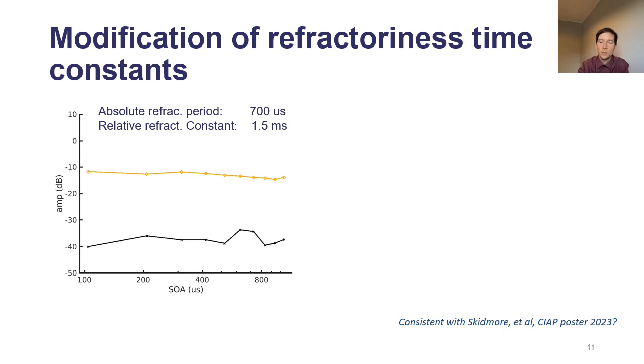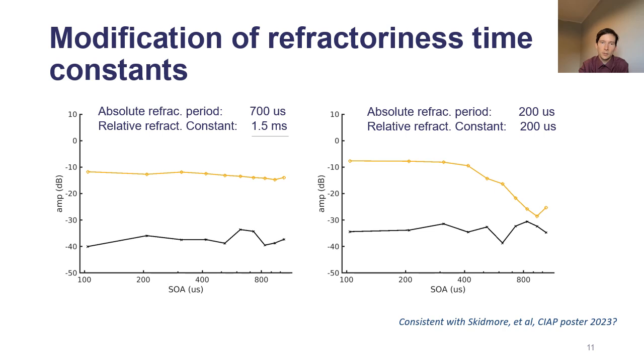We changed that to much shorter values, and this did recreate the patterns in CI users. So it could be an indication that refractoriness time constants are shorter than usually modeled with, and it's actually consistent with a recent study by Skidmore et al., where they derive such constants from ECAP recordings.